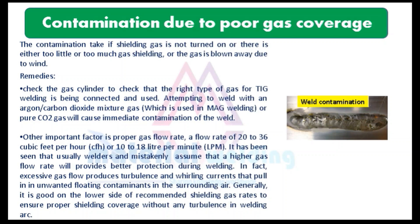It is seen that welders mistakenly assume that a higher gas flow rate will provide better protection during welding. In fact, excessive gas flow produces turbulence and swirling currents that pull in unwanted floating contaminants from the surrounding air. Generally, it is better to stay on the lower side of recommended shielding gas rates to ensure proper shielding coverage without any turbulence at the welding arc.